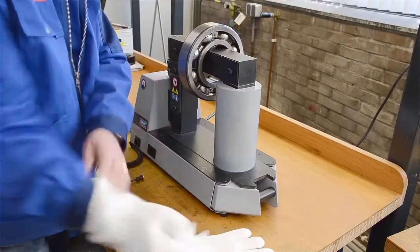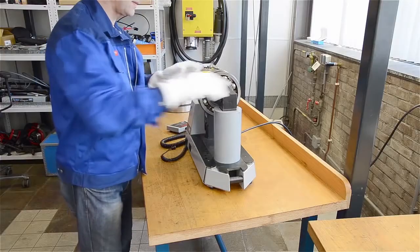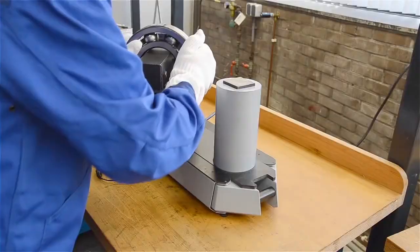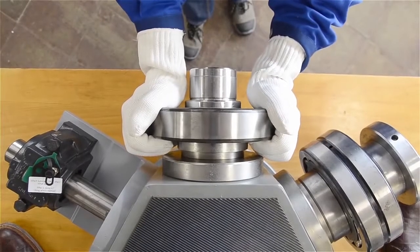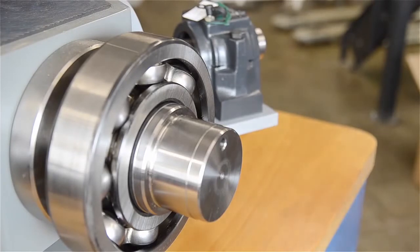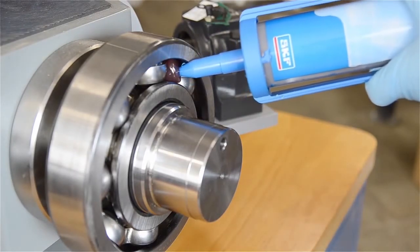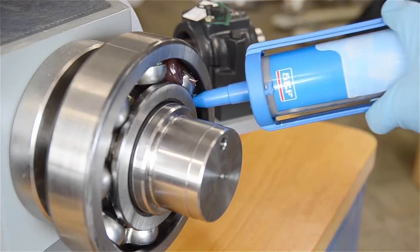Wearing SKF heat-resistant gloves, remove the bearing from the heater and place on the shaft. As the bearing cools, a strong interference fit results. Just apply lubrication and the bearing is ready to run.